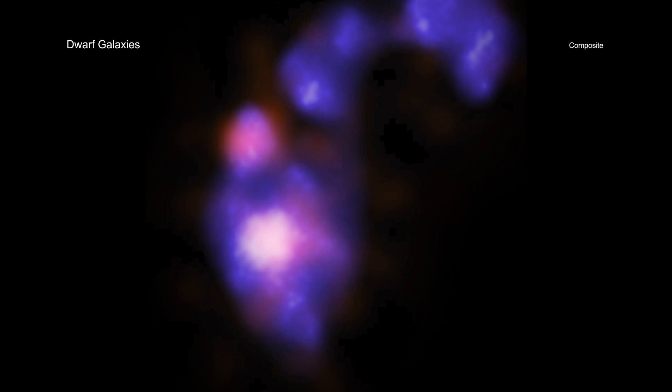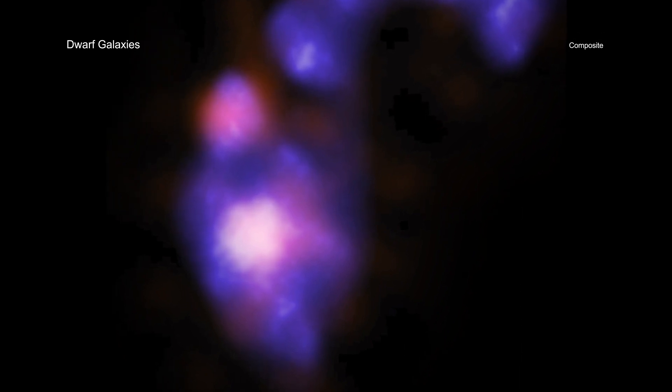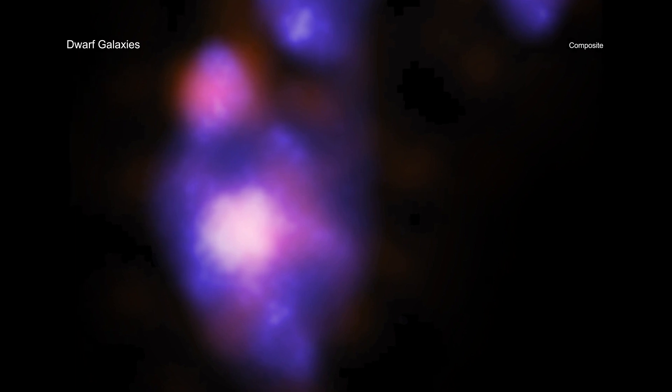Scientists think the universe was awash with small galaxies known as dwarf galaxies several hundred million years after the Big Bang. Most merged with others in the crowded smaller volume of the early universe, setting in motion the building of larger and larger galaxies now seen around the local universe.